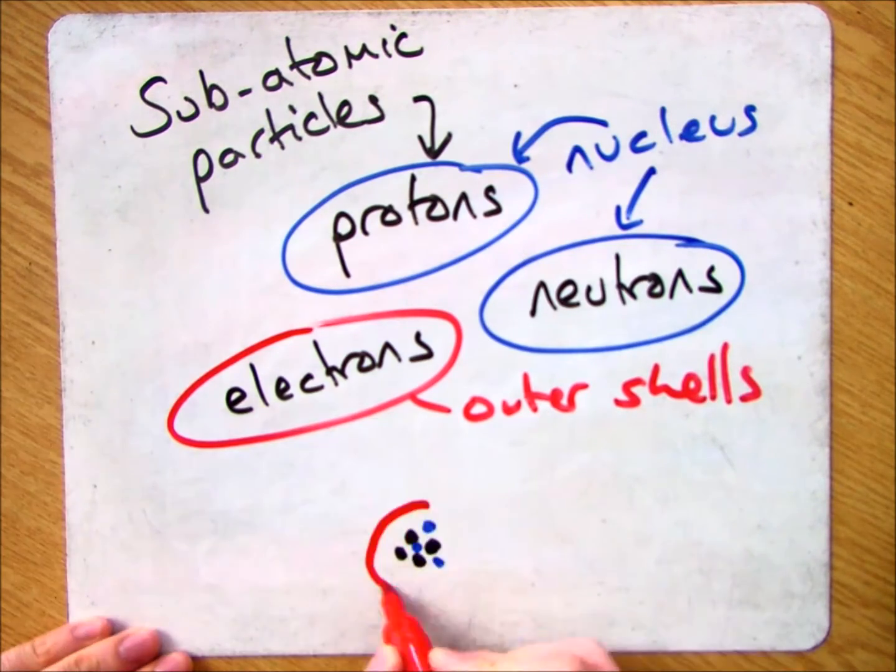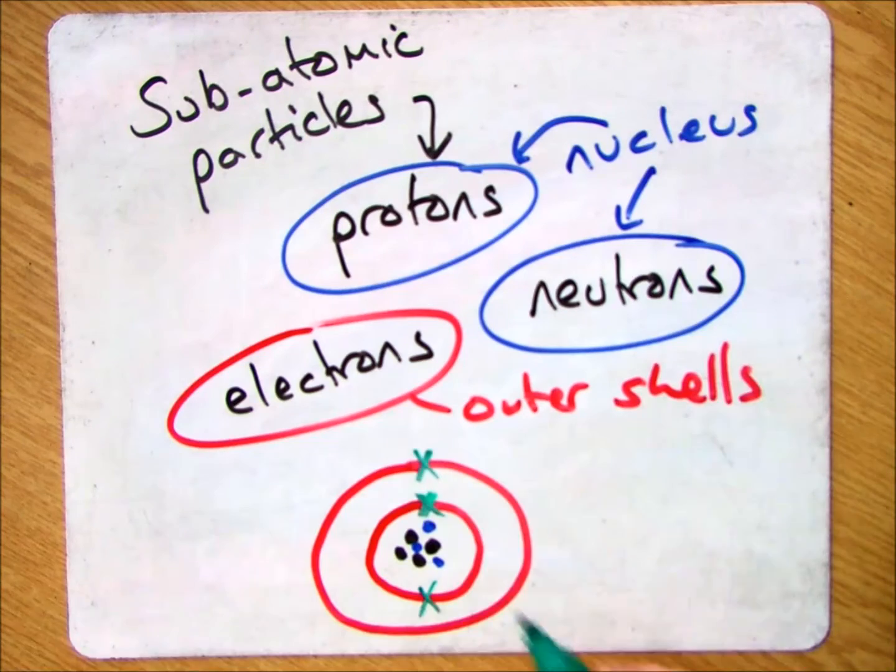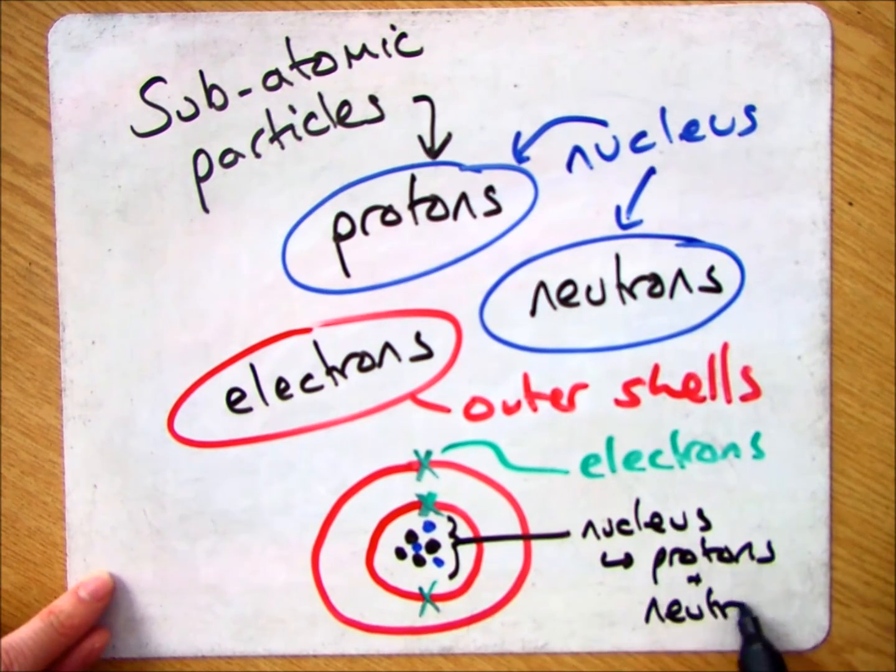Here we have an example of the atom. So we have the protons and neutrons in the centre and then the electrons around in the shells on the outside.